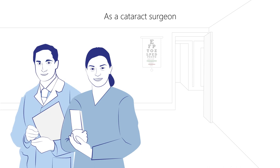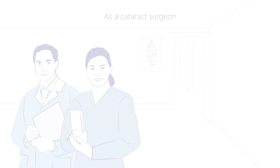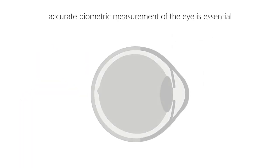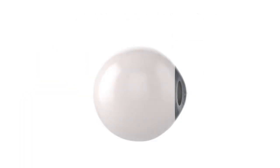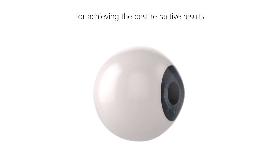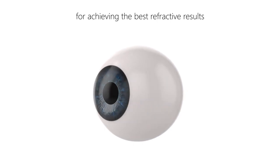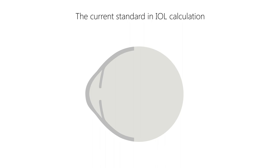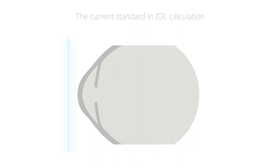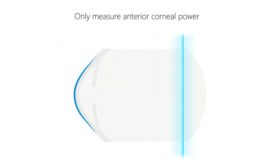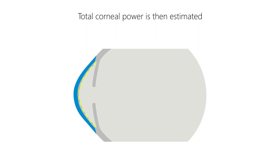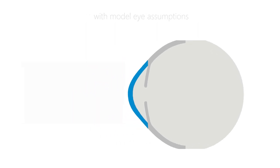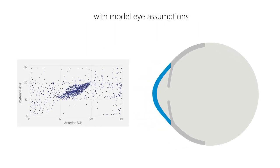As a cataract surgeon, you know that accurate biometric measurement of the eye is essential if you want to achieve exceptional refractive results for your patients. The current standard in IOL power calculation is to only measure the anterior corneal surface and then estimate the total corneal power using model eye assumptions or nomograms.